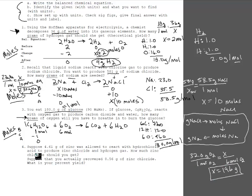I'm not going to do number four because it involves percent yield, which we haven't learned yet. Hopefully you're seeing the pattern: balance the chemical equation, take grams of what you know and turn it into moles, use your chemical equation to figure out moles of what's being asked, then turn the moles back into grams. It's grams → moles → moles → grams. Thanks a lot.